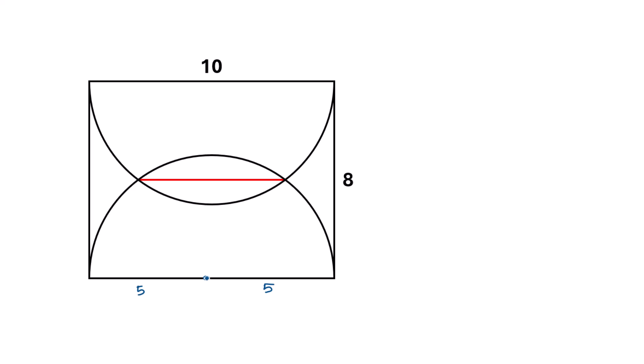Now join this point and this intersecting point so we will get this line. Now draw a perpendicular line from this point to this red line.